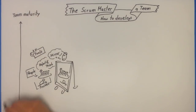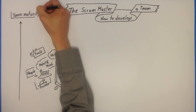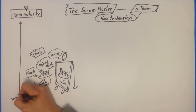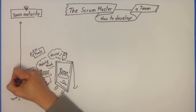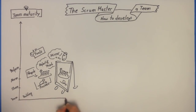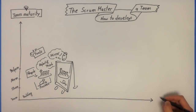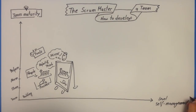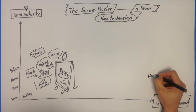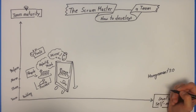If you think about team maturity and the team's ability to solve problems, this is actually a very interesting thing. In the beginning you have the team building phase where you build the team and set it together. You have the storming, norming, and performing phases of Tuckman. And I think there is a correlation to another thing I call the level of self-management.